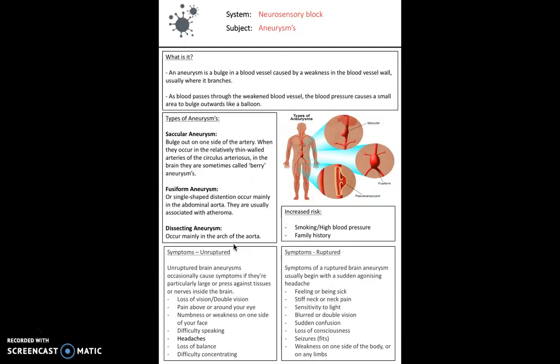There are symptoms for both unruptured and ruptured aneurysms, which is useful for spotting the condition before it ruptures. Unruptured symptoms include loss of vision, double vision, pain around the eye, numbness or weakness on one side of the face, difficulty speaking, and headaches. Ruptured symptoms include feeling or being sick, a stiff neck, neck pain, and sensitivity to light. The symptoms of a ruptured aneurysm are much more severe.